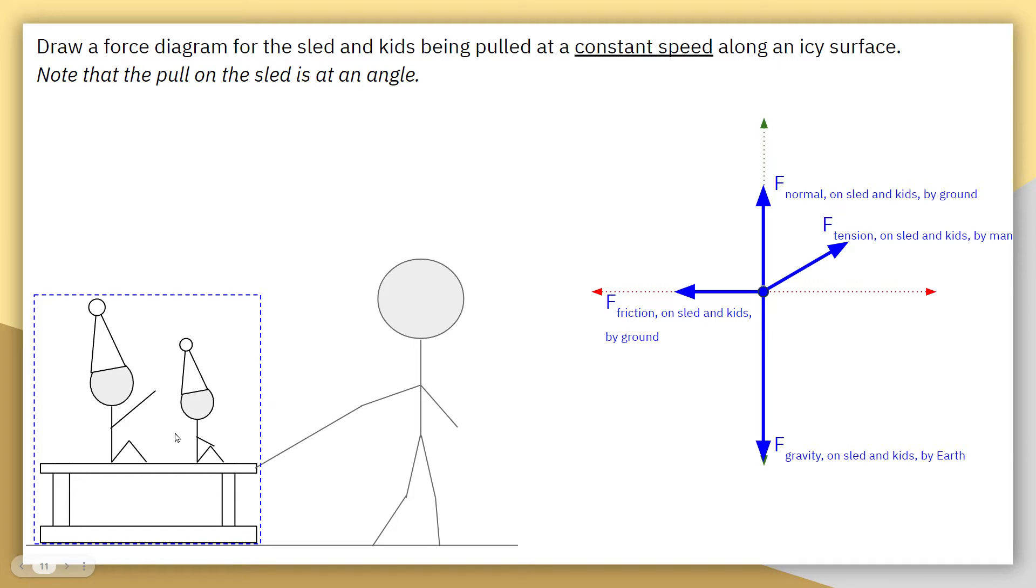typically, we've been drawing our normal forces the same size as our force gravity. But that really only applies if we have zero acceleration vertically, and we only have those two forces vertically.